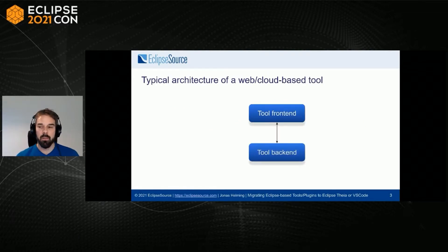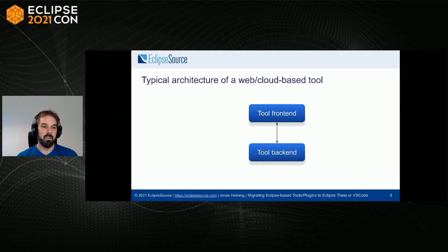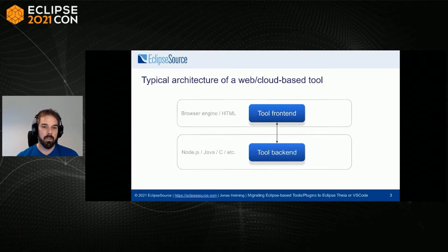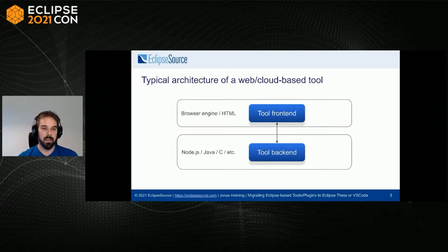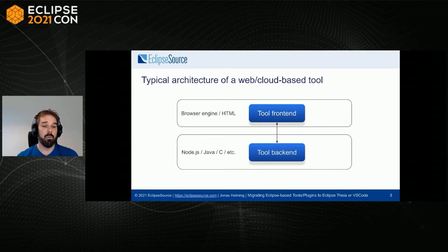Quick recap — I've shown this slide before, but just for people who haven't attended my previous talk: the typical architecture of a web-based tool is what we want to fit our tool into. A web-based tool typically has a tool front-end and a back-end, so we have a split between two parts that we usually don't have on the desktop. The front-end is written in HTML running in the browser using HTML, CSS, and JavaScript. The business logic runs in the back-end, which often runs on Node.js but also integrates other languages like Java or C. We need to fit our desktop tool features into this split architecture.